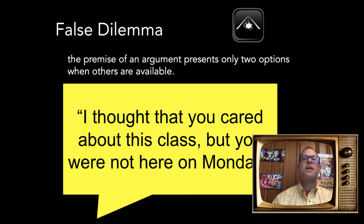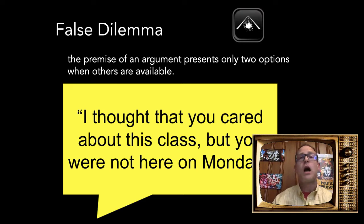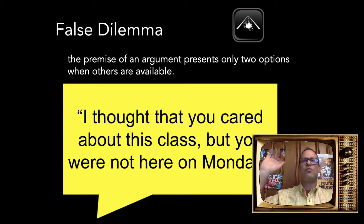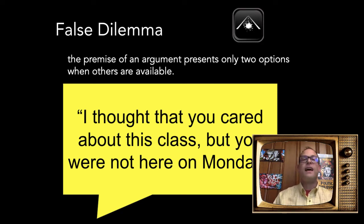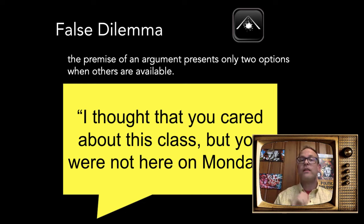False dilemma: the premise of an argument presents only two options when others are available. Suppose a student misses Monday class and comes in Wednesday. I say, 'I thought you cared about this class, but you weren't here Monday.' But the only options aren't 'I care' or 'I attend' — it could be that they were in a car accident. Anytime you're faced with only two options and they're both bad, sniff around and look for a third. There's probably a way to split the dilemma.